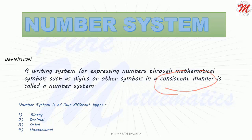On the basis of rules, there are four types of number system: binary, decimal, octal, and hexadecimal.